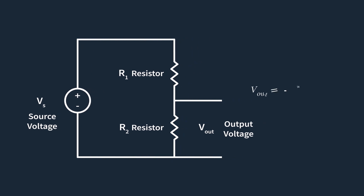The output voltage of a voltage divider can be calculated using the voltage divider equation. Here, V sub s is the source voltage in volts, R1 and R2 are the resistances of the first and second resistors in ohms, and Vout is the output voltage. Voltage division occurs because the resistors divide the total voltage based on their resistance values — the higher the resistance, the larger the voltage drop. The output voltage Vout is proportional to the resistance R2. If R2 is larger compared to R1, more of the input voltage V sub s will appear across R2.